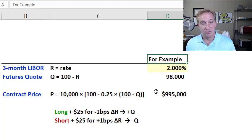If we take a long position in the Eurodollar futures contract, we expect a $25 gain on the contract for every one basis point drop in the underlying LIBOR, because that's reflected in an increase in the quote price.